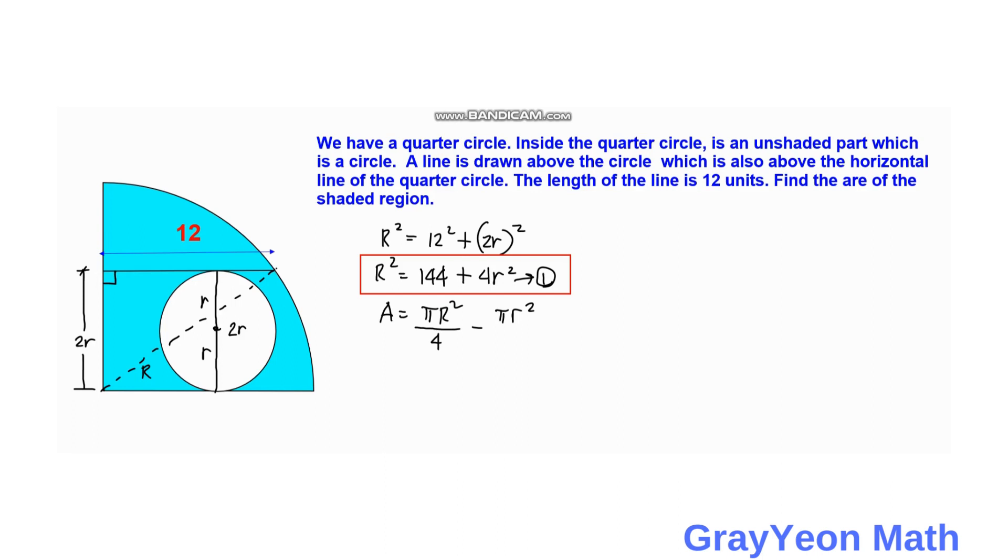Okay, so next thing is we substitute the value of R square from equation 1. That is area equal to pi times 144 plus 4R square. Okay, so minus pi over 4 minus pi R square but actually you can factor out the 4 from the numerator so we have pi over 4 times 4 times 36.